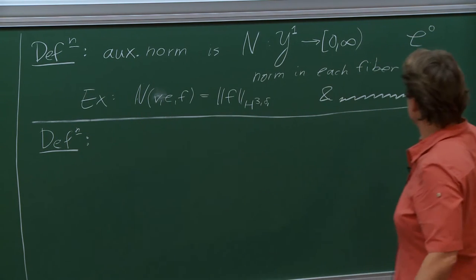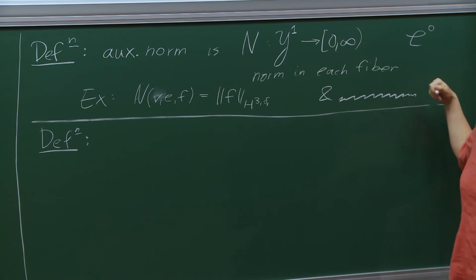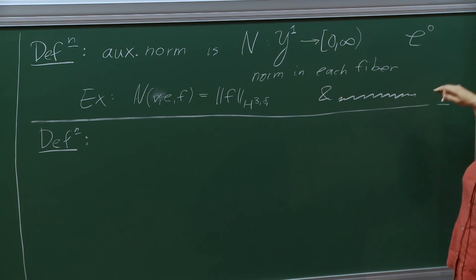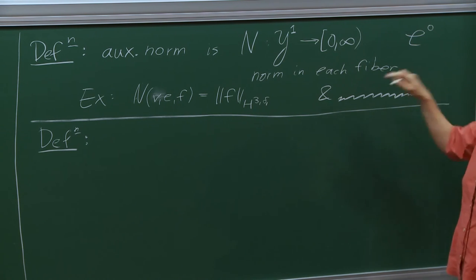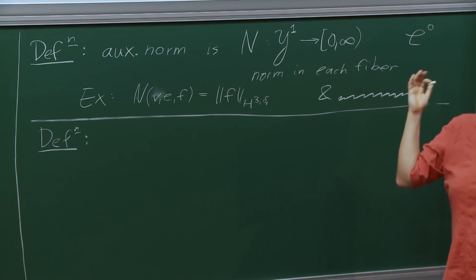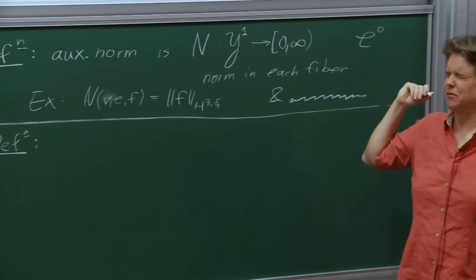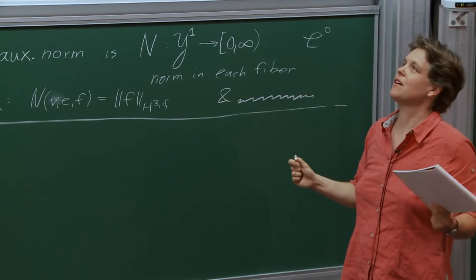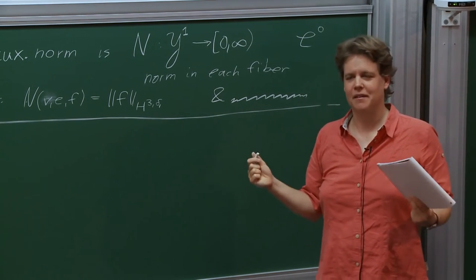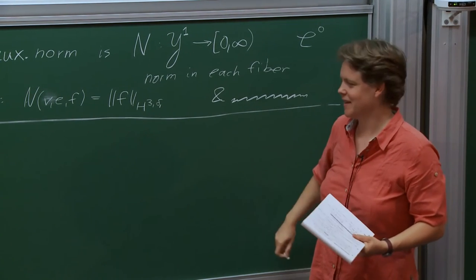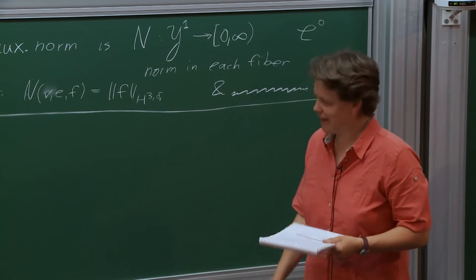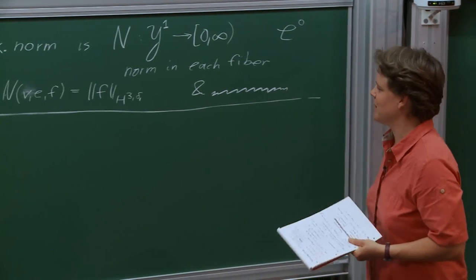The small print can all be found in the Hofer-Wysocki-Zehnder papers. If you're trying to find that specific small print, I'd recommend the user's guide — now called 'Polyfolds at First and Second Glance' — which is posted on the webpage. It lacks the small print but always precisely cites the place in the publications where you can find it.